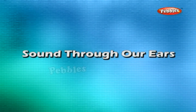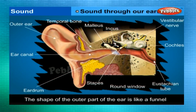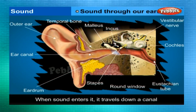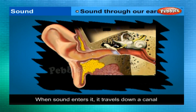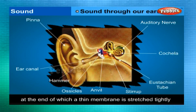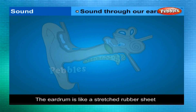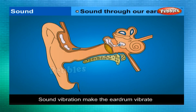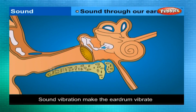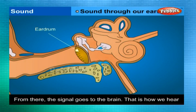We hear sound through our ears. The shape of the outer part of the ear is like a funnel. When sound enters it, it travels down a canal, at the end of which a thin membrane called the eardrum is stretched tightly. The eardrum is like a stretched rubber sheet. Sound vibrations make the eardrum vibrate. The eardrum sends vibrations to the inner ear, from where the signal goes to the brain. That is how we hear.